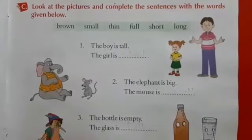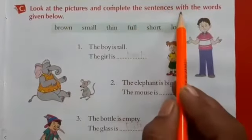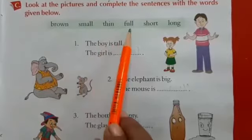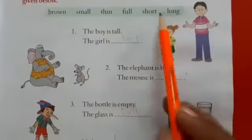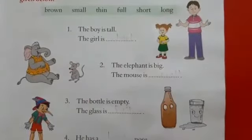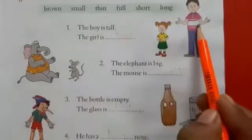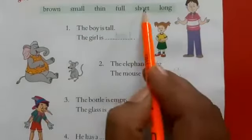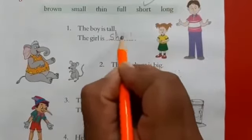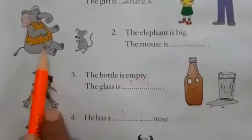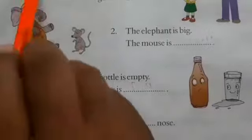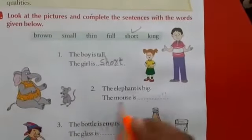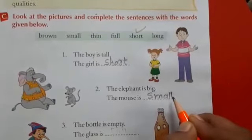Now exercise C. Look at the pictures and complete the sentences with the words given below: brown, small, thin, full, short, or long. The boy is tall, but the girl — look at the girl — the girl is short. We have 'short' in the word list, so use that here. Now look: the elephant is big but the mouse is small, so choose the word 'small' — s-m-a-l-l.